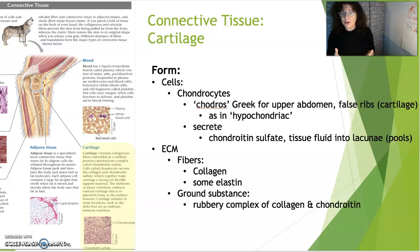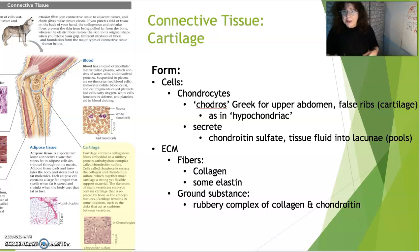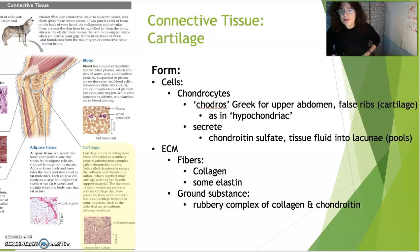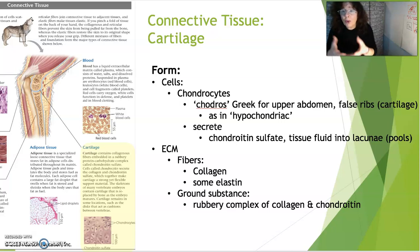Chondrocytes come from the Greek word chondros, meaning the upper abdomen. The upper abdomen is where you have your false ribs, which are actually cartilage rather than bone in the front. From the Greek, a hypochondriac was a person who feels sick all the time — literally feeling under (hypo) their upper abdomen. So cartilage cells are called chondrocytes because they relate to this region of the false ribs.